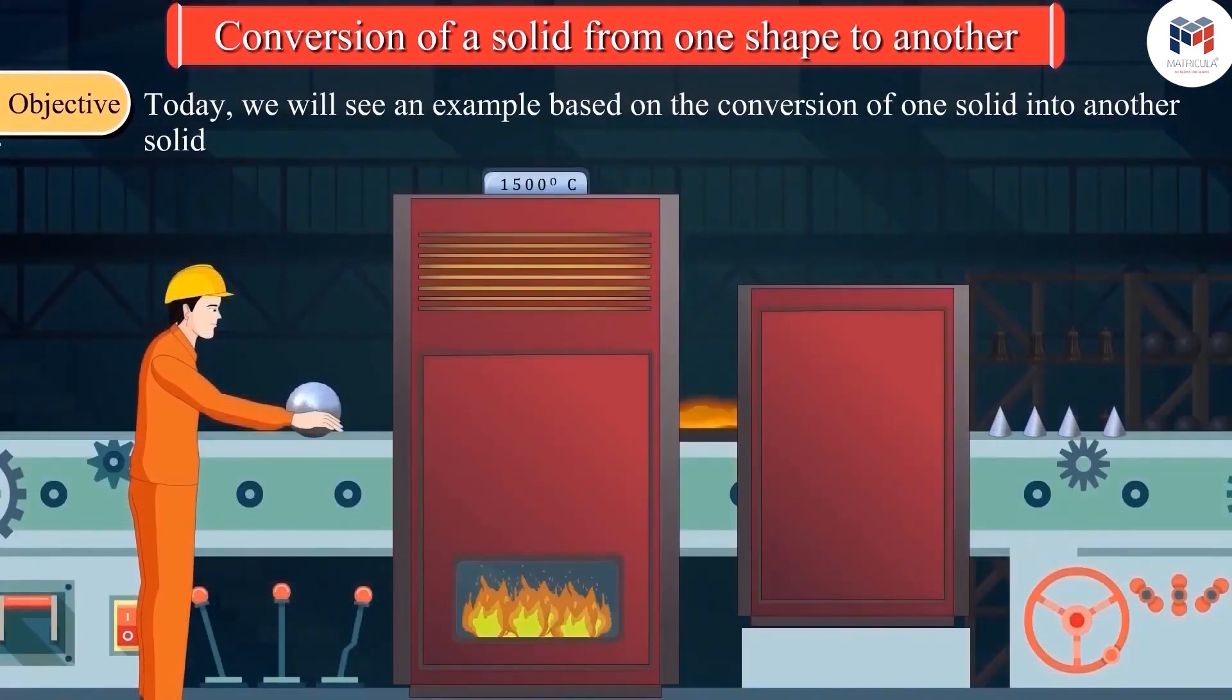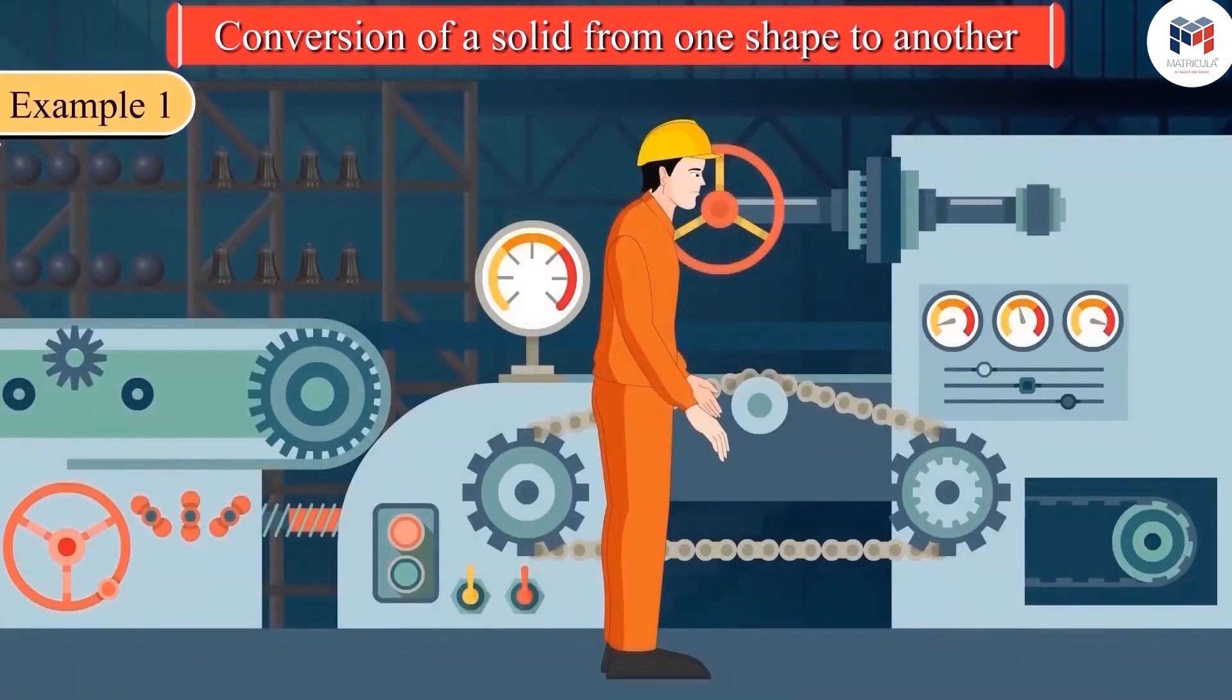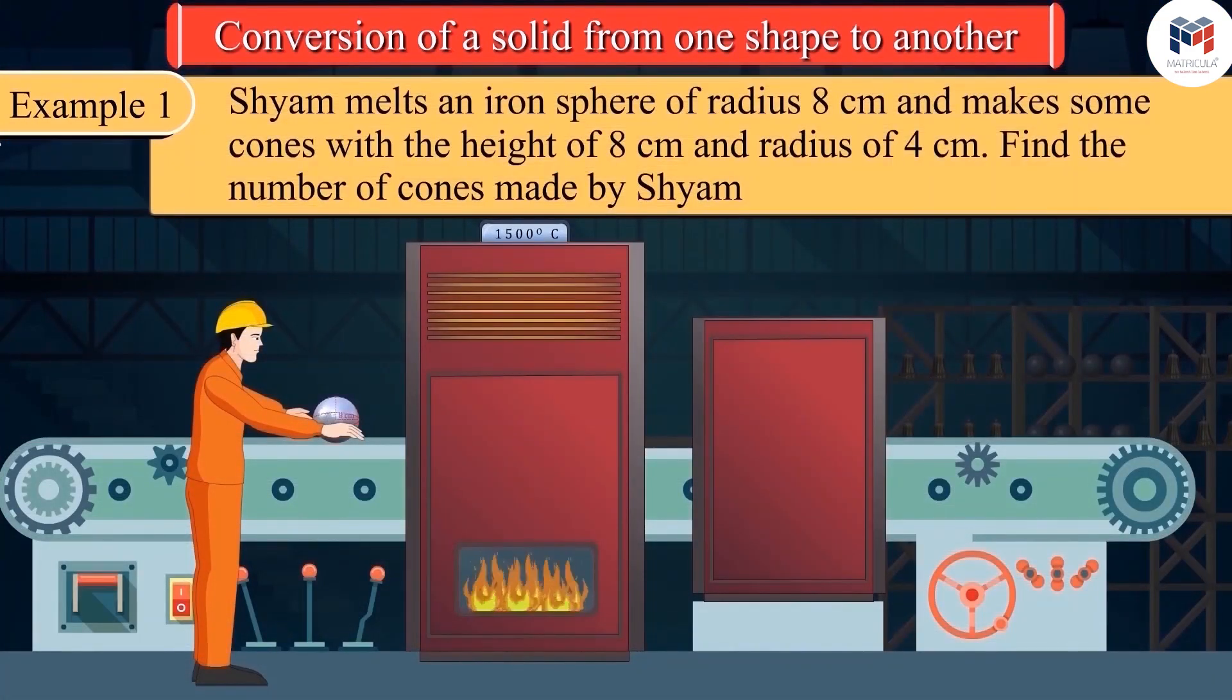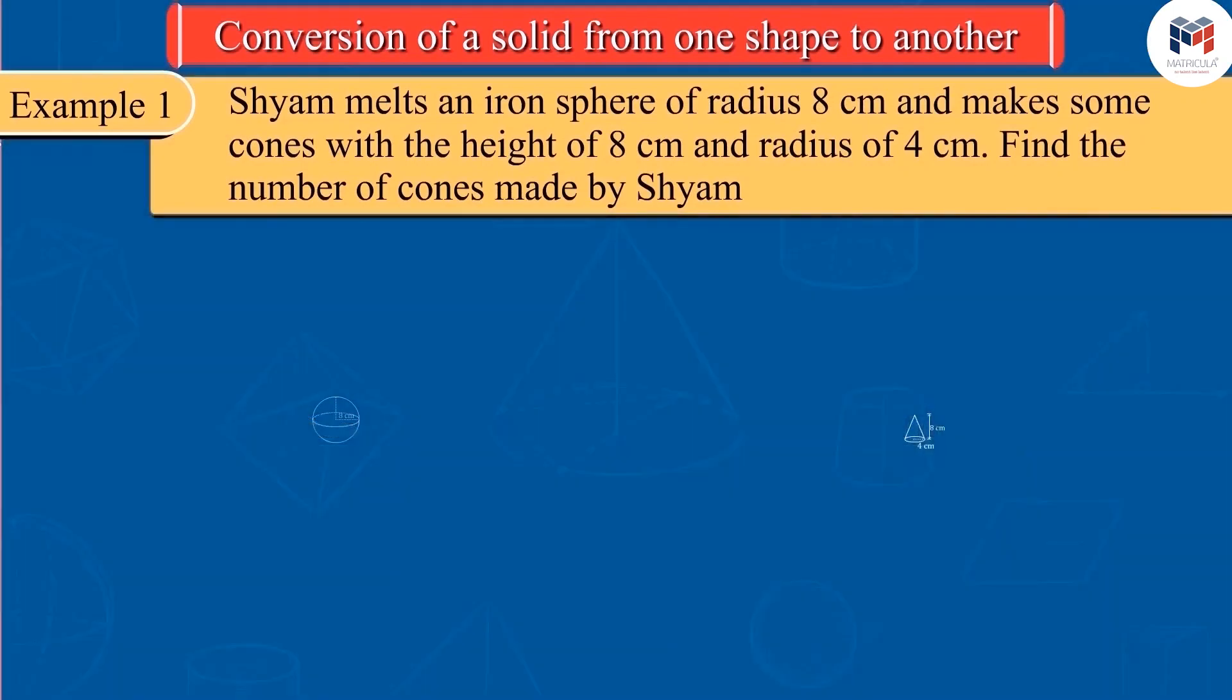Today, we will see some interesting examples based on this. Shyam works in an iron factory where iron objects of different shapes are made. One day, Shyam tries to melt an iron sphere of radius 8 cm and makes some cones with a height of 8 cm and radius of 4 cm.